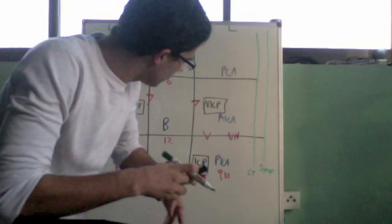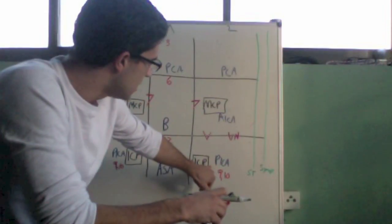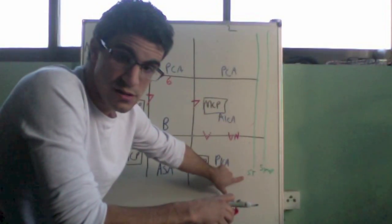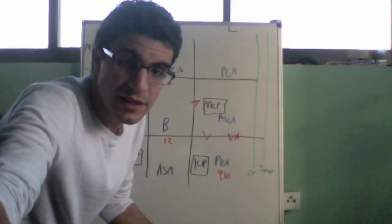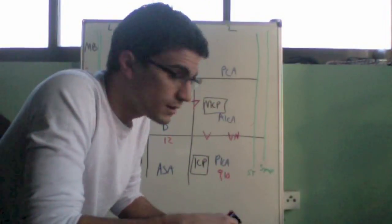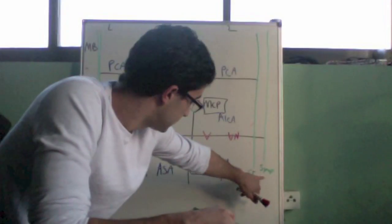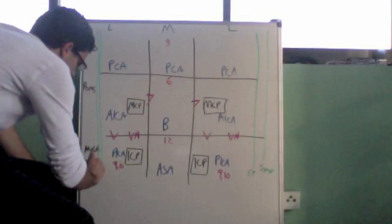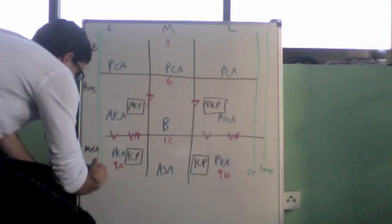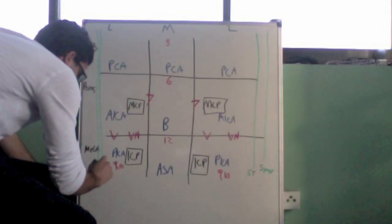So, like, if you knock out, for example, PICA, you're going to have loss of pain and temperature, and you're going to have the Horner syndrome because you lose the sympathetic innervation. Because that's where it crosses the PICA zone. And then the same thing here, sympathetic and spinothalamic.